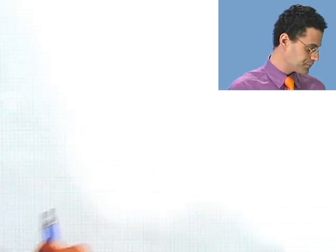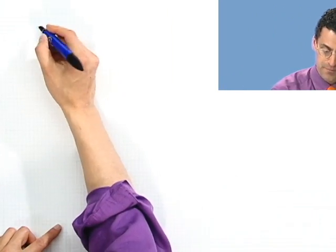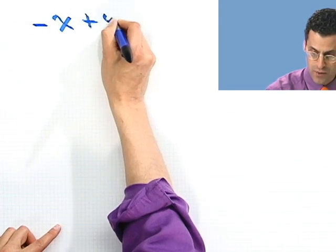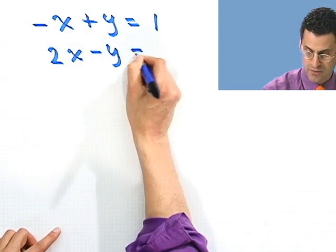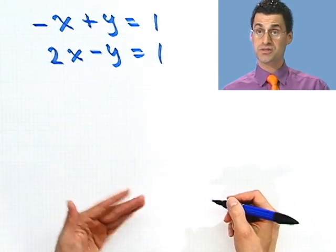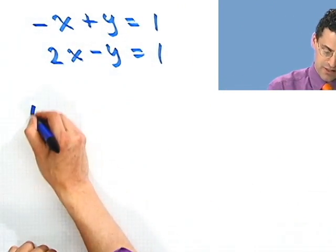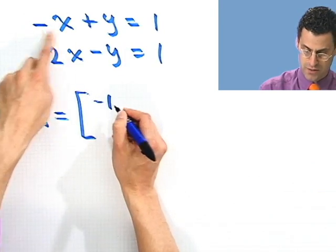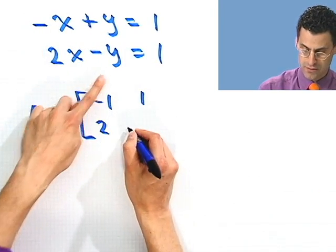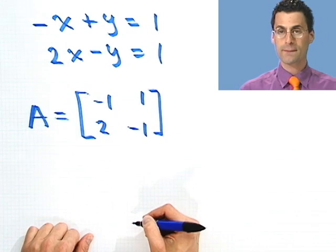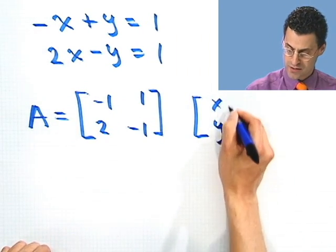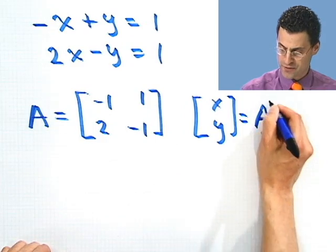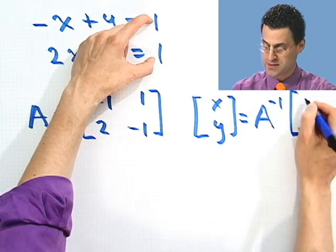Suppose I have the system minus x plus y equals 1, 2x minus y equals 1. How would I solve this using this system? What I would do is create a matrix A, which would just be the coefficients. So a minus 1, 1, 2, minus 1. And then the solution, [x; y], should just be A inverse multiplied by [1; 1].